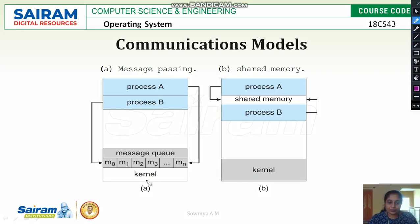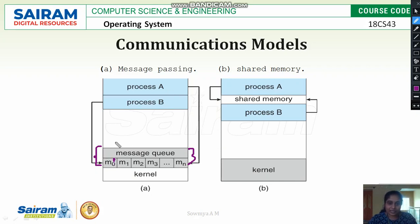The diagram shows how message passing is done. There will be a message queue which contains all the messages from the processes. The process will send the message with the process ID and the message. In the message queue, the process which requires a message can search and get the message based on process ID. If the message is sent by process A, it will carry A's process ID, and if process B requires that message, it can be retrieved.